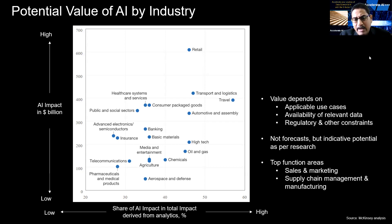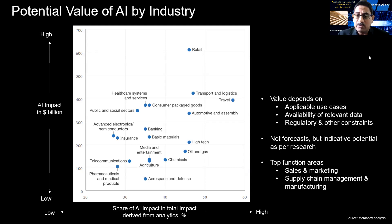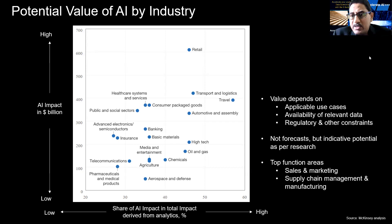Another key point is, if we look at the top functions within some of these industries, the research also says the focus is on sales and marketing, supply chain management, manufacturing, and these kinds of areas. That's all about it. Please give your feedback in the comments below. If there are any queries or feedback, please feel free to write. Thank you so much.